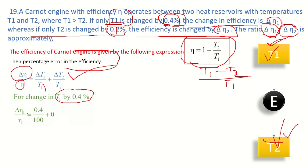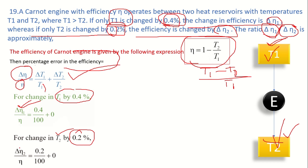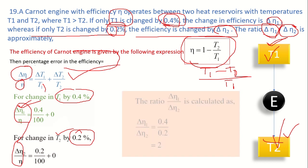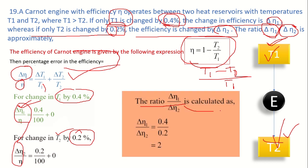When T1 changes by 0.4%, substituting gives Δη₁/η = 0.4/100. When T2 changes by 0.2%, substituting gives Δη₂/η = 0.2/100. The ratio Δη₁/Δη₂ = 0.4/0.2 = 2. So the final answer is 2.